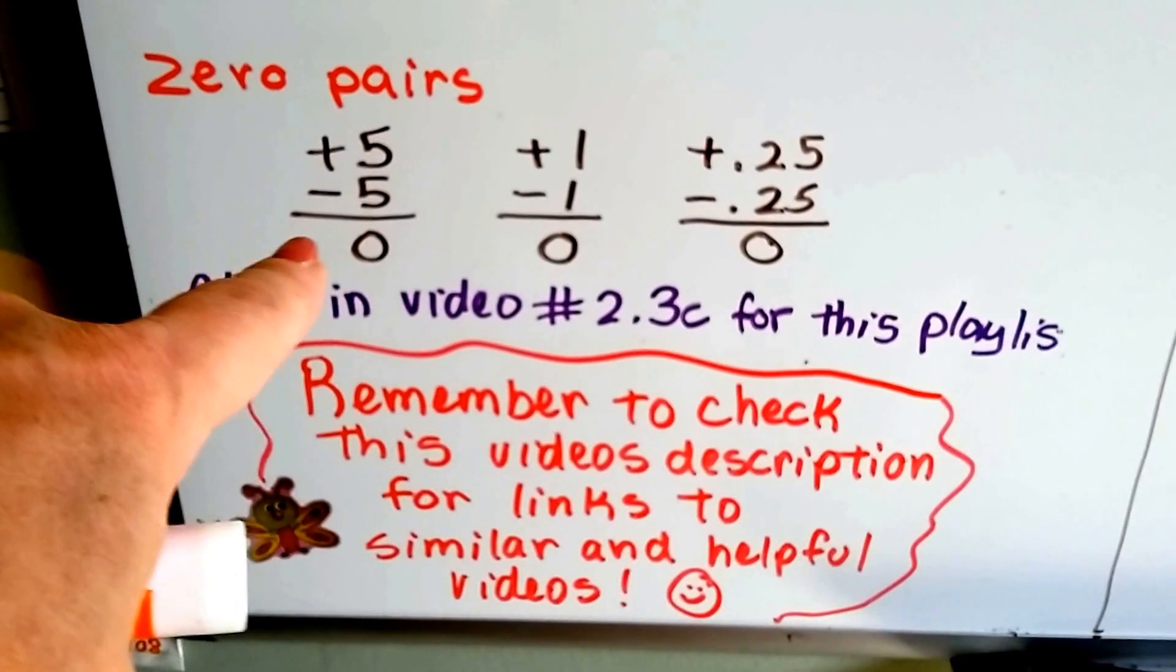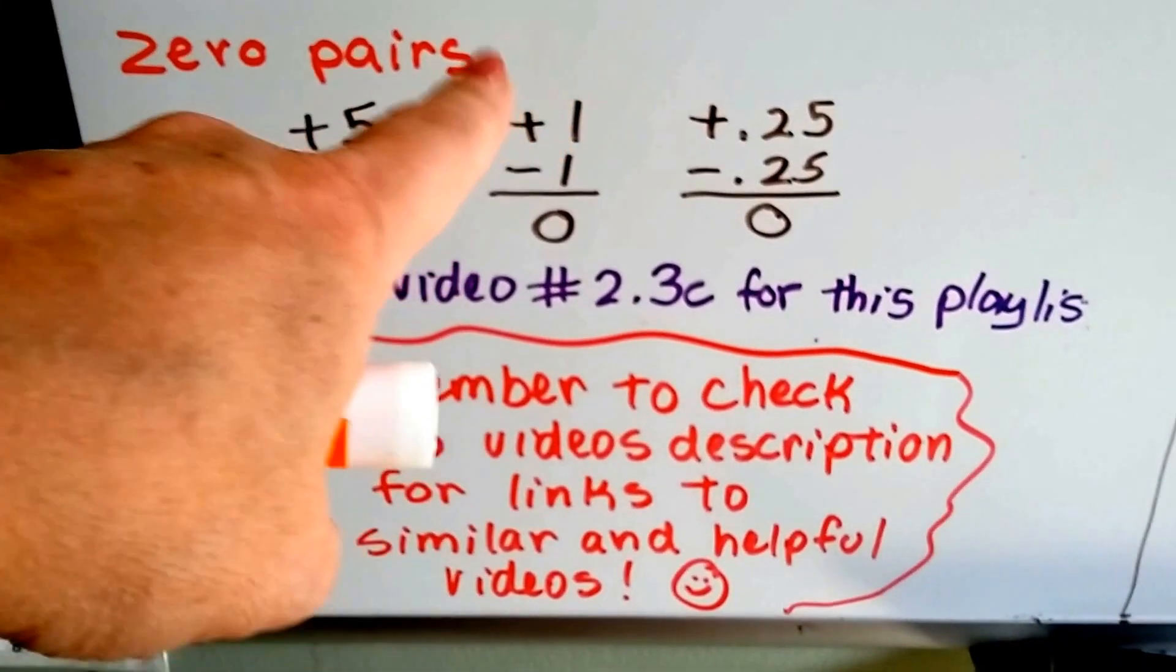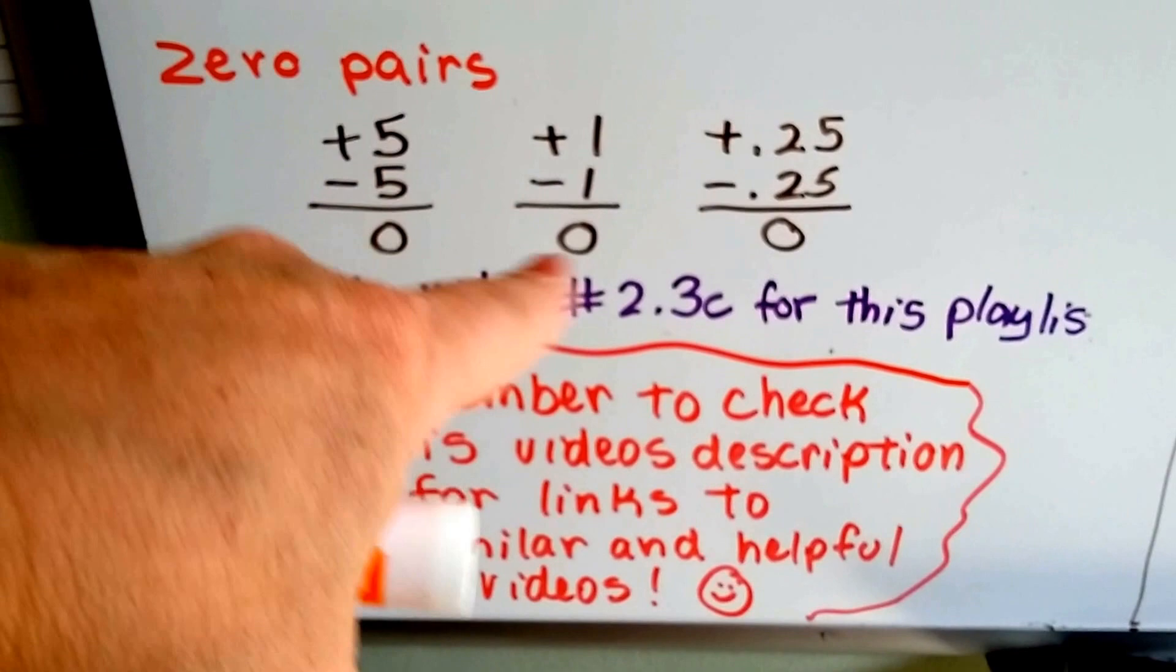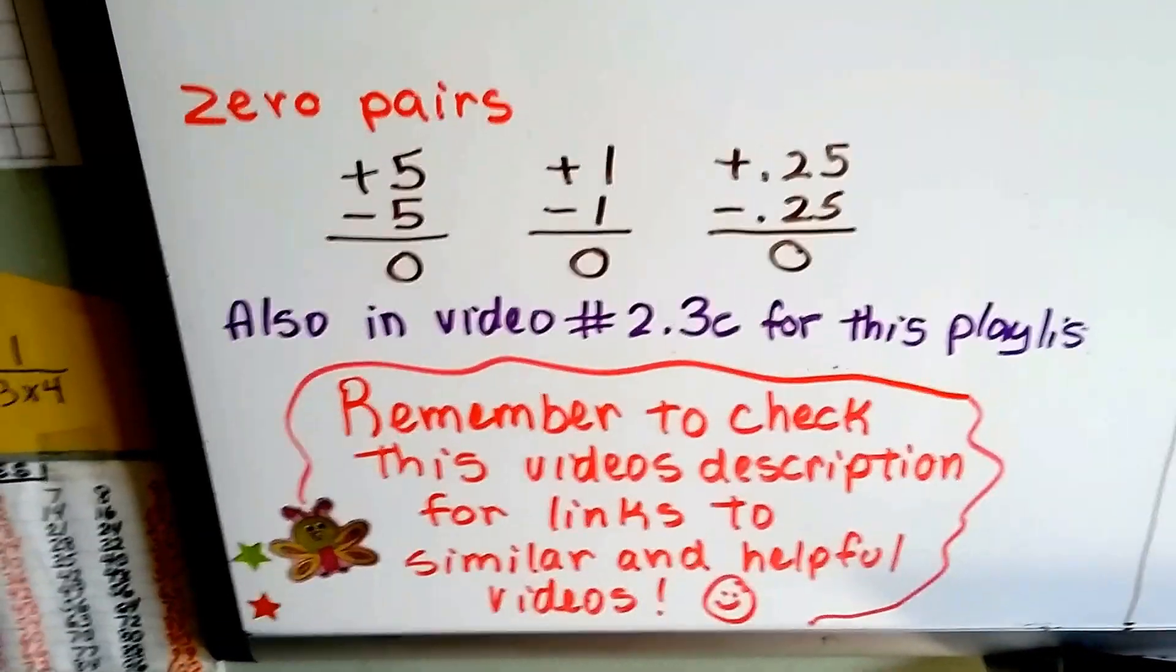If you have a positive 5 and take away a negative 5, that's going to be a zero. And if you add a negative and a positive 1, that equals zero. And it works with decimals and fractions too.